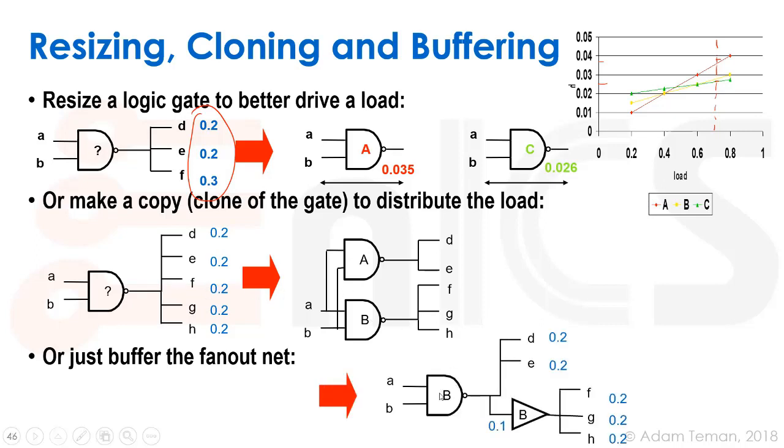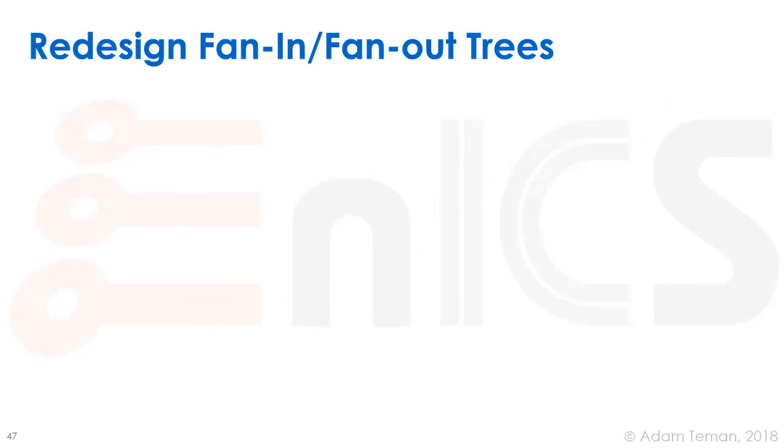Obviously we can also buffer the fanout net. So instead of actually cloning and making another copy of the NAND gate, depending also on where things are placed in the end, we can have some of these capacitances sitting off the same net and some of them going through a buffer which can strengthen the signal and better drive the rest. Basically this NAND gate is now driving 0.5 versus this one driving 0.6, and maybe that gets us a better balance.